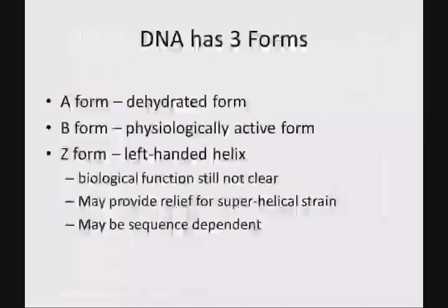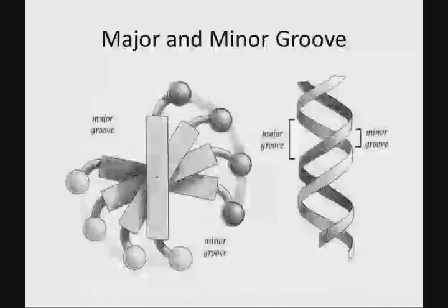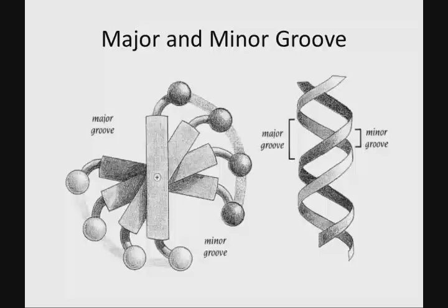DNA comes in more than one form. The physiologically active form — the one we'll focus on — is the B form of DNA, the classic double helix. There are also A and Z forms, but we won't cover those here. In this picture, you can see that the B form has grooves of different sizes alternating around the helix — a small groove and then a big groove — which we call the major and minor grooves. These result from the structure of the nucleotide pairs: the sugar has a kink in it, and when stacked and linked by the phosphodiester bond, this produces a major groove on one side and a smaller minor groove on the other.